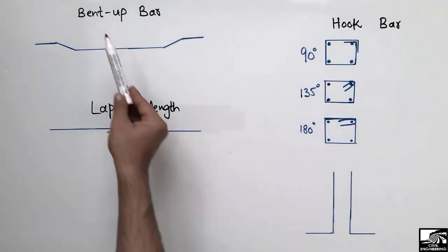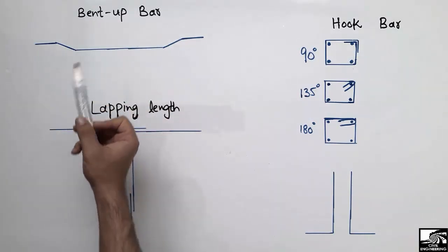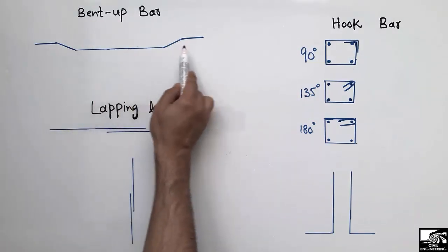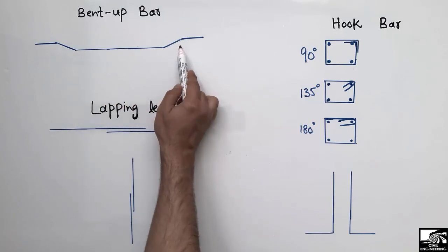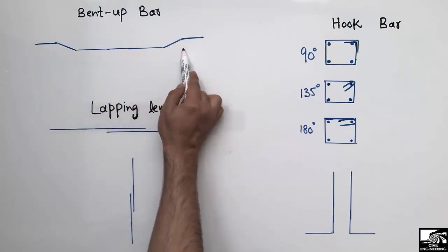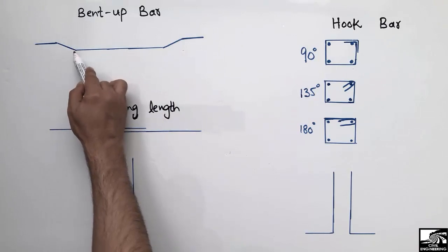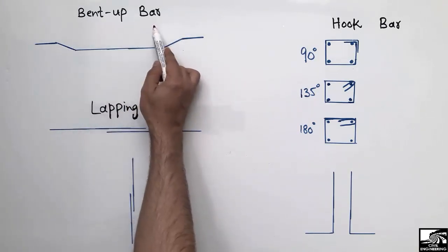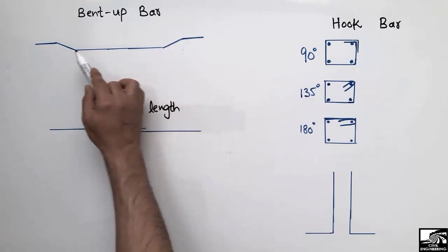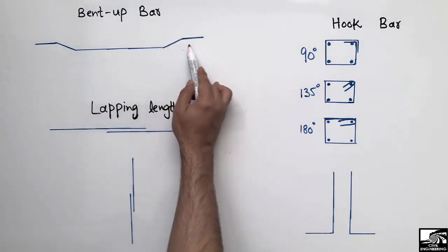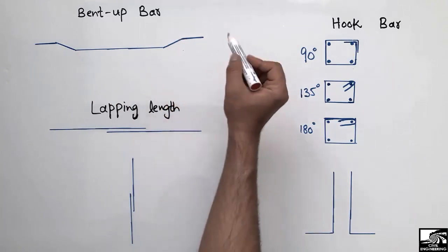Starting with the bent-up bar — looking into this reinforcement shown in the figure, we have two types of bends in this reinforcement bar, one on the left side and one on the right. This type of bar is known as the bent-up bar because it has been bent at different locations. It is important to know why we provide this bend.